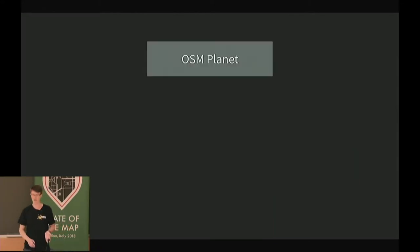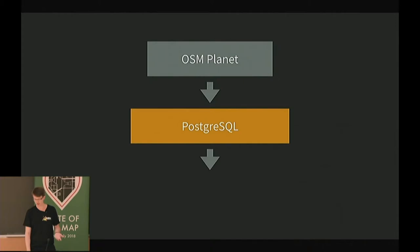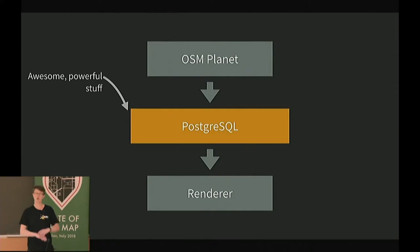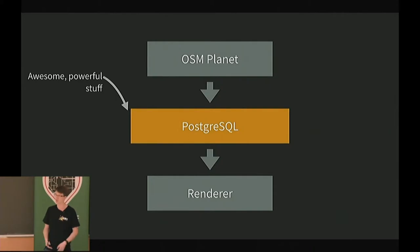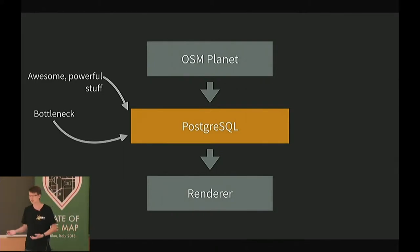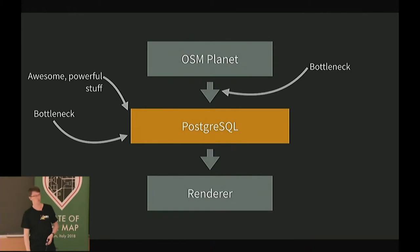The state of the art is basically always the same. We have the OSM planet, we import it into a Postgres database, and then we render it. This is what nearly everyone is doing except for a few exceptions. All the awesome and powerful stuff is in Postgres — it has all the spatial operations, we can use all the GEOS stuff. But on the same side, it's a big bottleneck, because all the fancy stuff in Postgres is not very fast, and all the importing is also a big bottleneck.